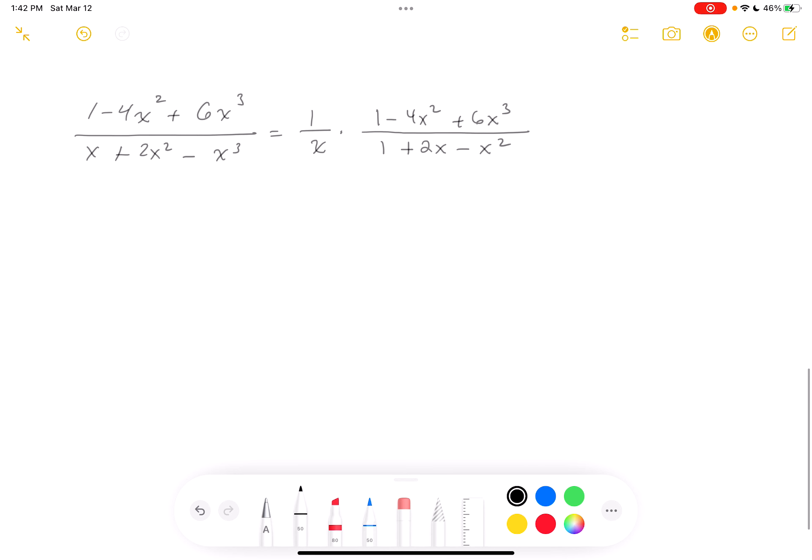What I'm going to do is I'm going to do this part here. When I'm done with it, I'll multiply by 1 over x. Let's write this down. So it's 1 plus 2x minus x squared. And I'm dividing that into 1. There are no x's. I'm holding the place. Minus 4x squared plus 6x cubed. One step at a time.